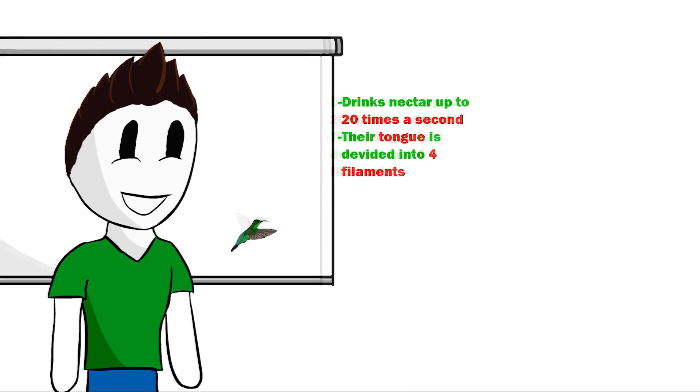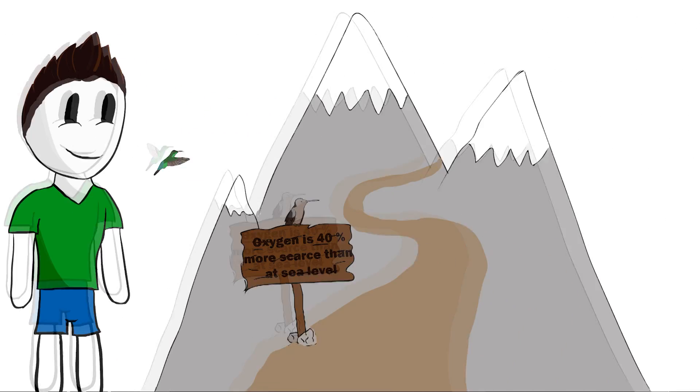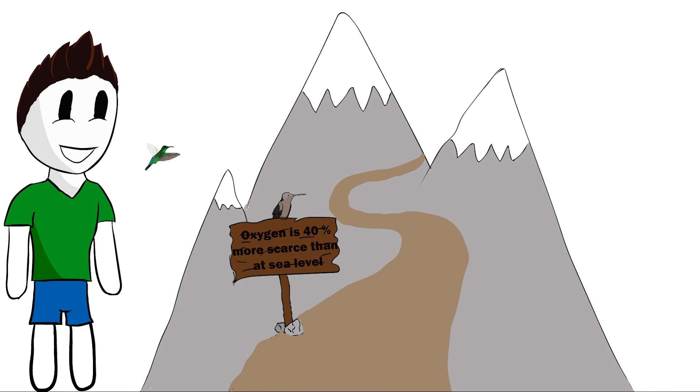But nectar isn't the only source of energy which is wasted so fast. For proper functioning, hummingbirds need a lot of oxygen. Hummingbirds can live at higher altitudes, although oxygen is 40% more scarce than it is at sea level. In some species, hemoglobin has evolved to grab oxygen molecules like a magnet. They can resist when a human would fall into a coma due to the lack of enough oxygen.